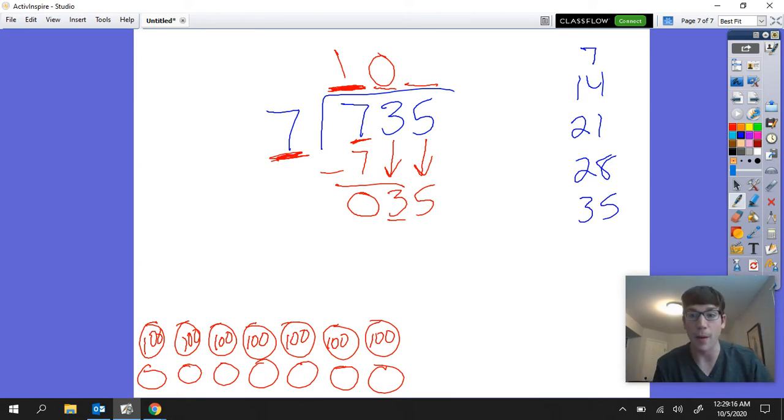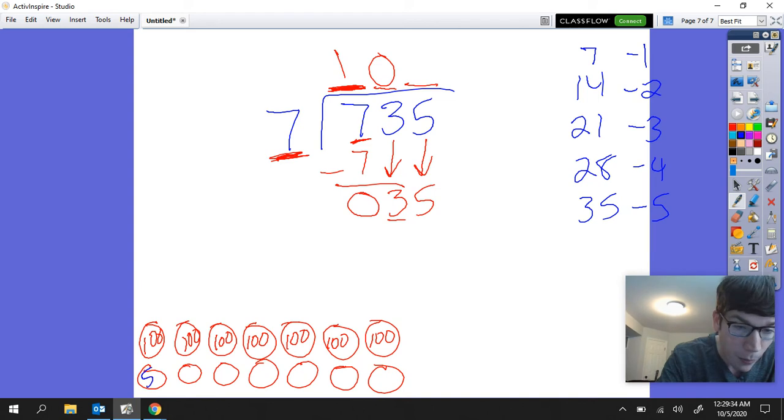And notice we hit that 35 is going to be my multiple. So this is going to be one multiple, two multiples, three multiples, four multiples, and five multiples. So now notice if I'm splitting up 35 into seven different groups I can put five into each group: five, five, five, five, five, five into each group.